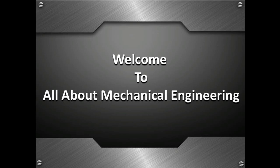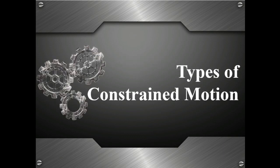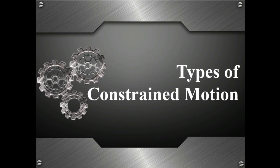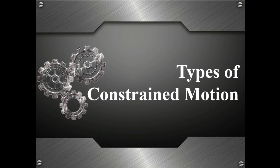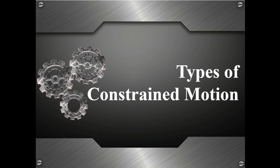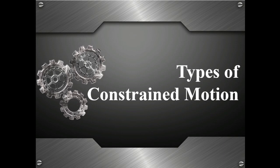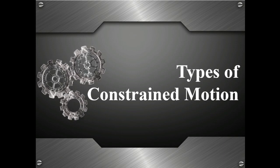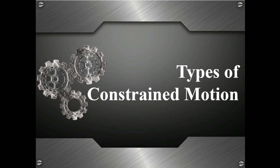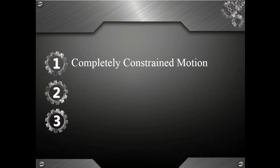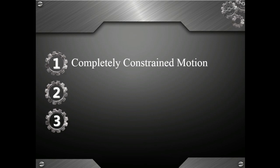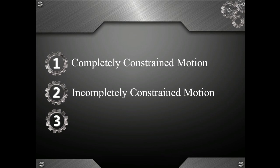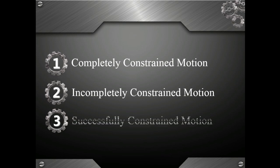Hi, welcome to All About Mechanical Engineering. This is our second video on Theory of Machines, and for today the topic of discussion is types of constrained motions. We have seen the meaning of constrained motion in our previous video. Now we will discuss the types of constrained motions. Basically, there are three types of constrained motions: the first is completely constrained motion, the second is incompletely constrained motion, and the third is successfully constrained motion.